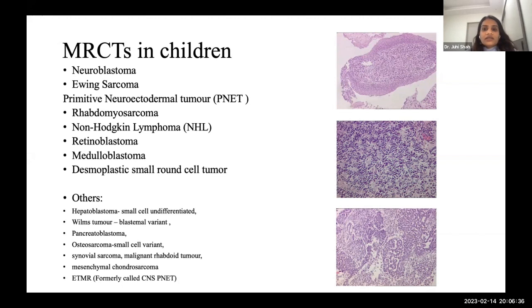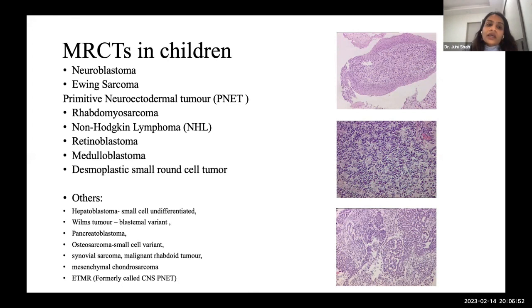We also see small round blue cells in other pediatric solid tumors — for example, hepatoblastoma (small cell undifferentiated variant, known to have low AFP), Wilms tumor with blastemal variant, pancreatoblastoma, osteosarcoma small cell variant, synovial sarcoma, malignant rhabdoid tumor, mesenchymal chondrosarcoma, and ETMR — the embryonic tumor with multilayered rosettes, formerly referred to as CNS-PNET.